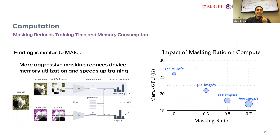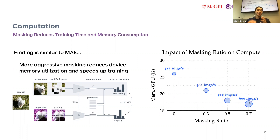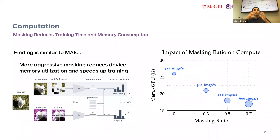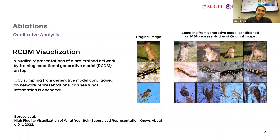By doing masking we significantly improve computational overhead. With more masking, memory utilization per GPU decreases, allowing training of bigger models in much less time — throughput increases with masking ratio. An interesting finding: the larger the model or the smaller the patch size, the higher the masking ratio you should use.